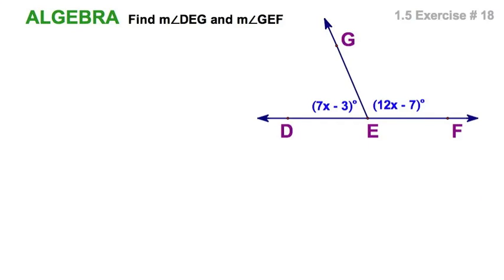Here's an algebra problem that you will see over and over again. We've got two angles here, DEG and GEF. We have algebraic expressions for the two, and they are a linear pair. Remember, we can assume collinearity from the diagram. This is exercise 18 from this section. Let's set up the arithmetic.